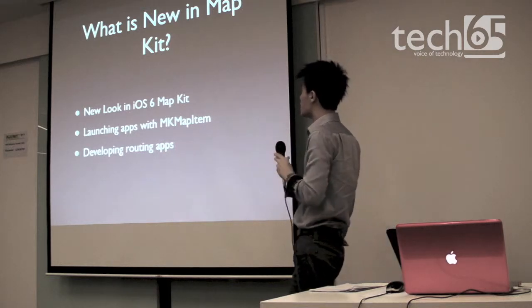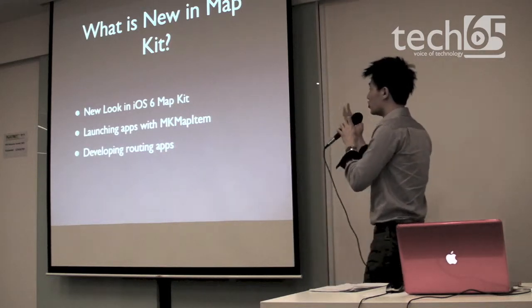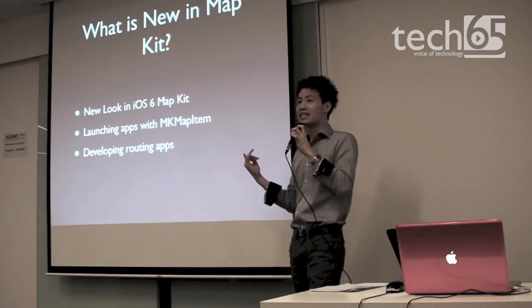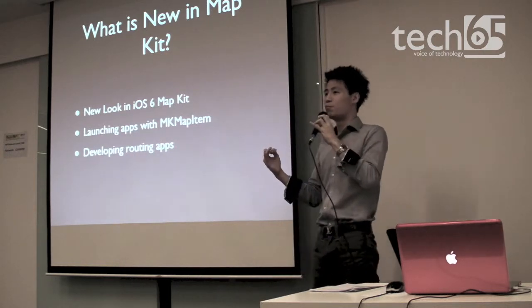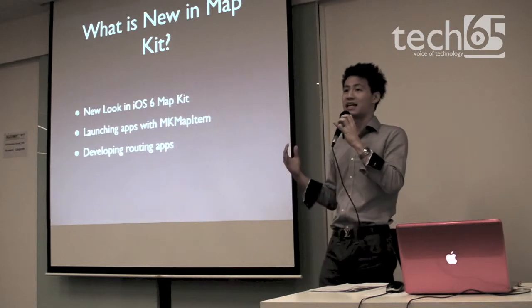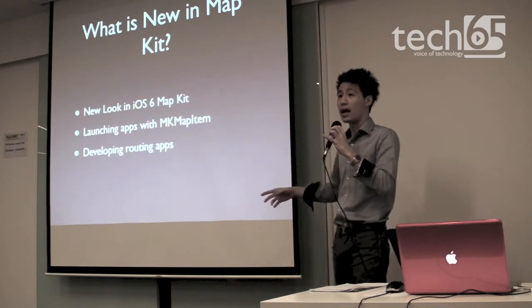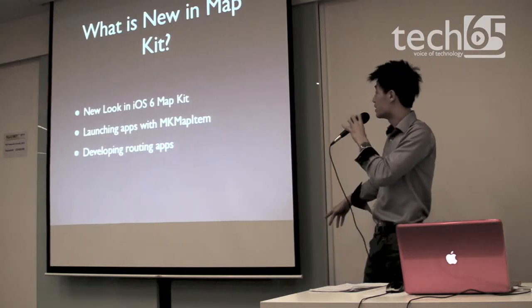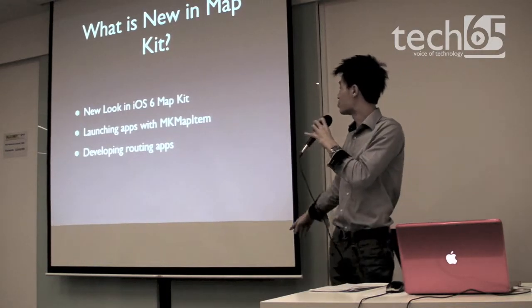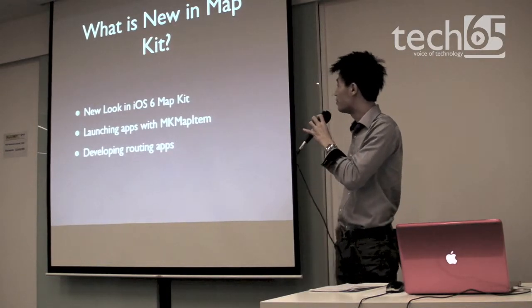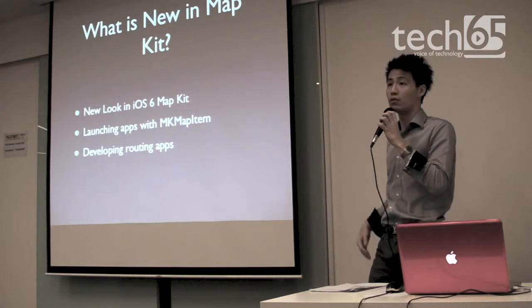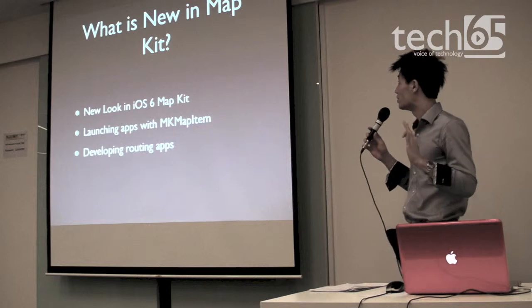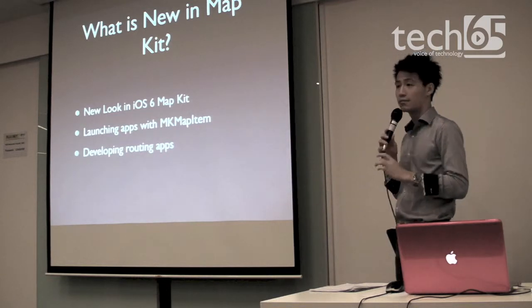Very quickly, what's new in MapKit? Basically three new things. Number one, there's a new look — Apple has moved away from Google Maps and decided to integrate their own Apple Maps into MapKit. Second, there's launching apps with MKMapItem, and the last one is developing your own routing apps. These are the three new things available with iOS 6 MapKit.